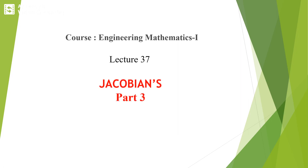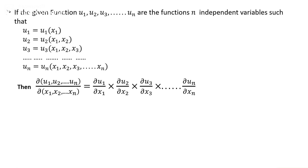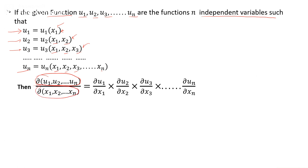Lecture 37, Jacobians Part 3. Continuation of the previous lecture. The next property: if we have n functions u1, u2, ..., un with independent variables such that u1 is a function of x1 only, u2 is a function of x1 and x2, u3 is a function of x1, x2, x3, and so on, up to un which is a function of x1, x2, ..., xn.